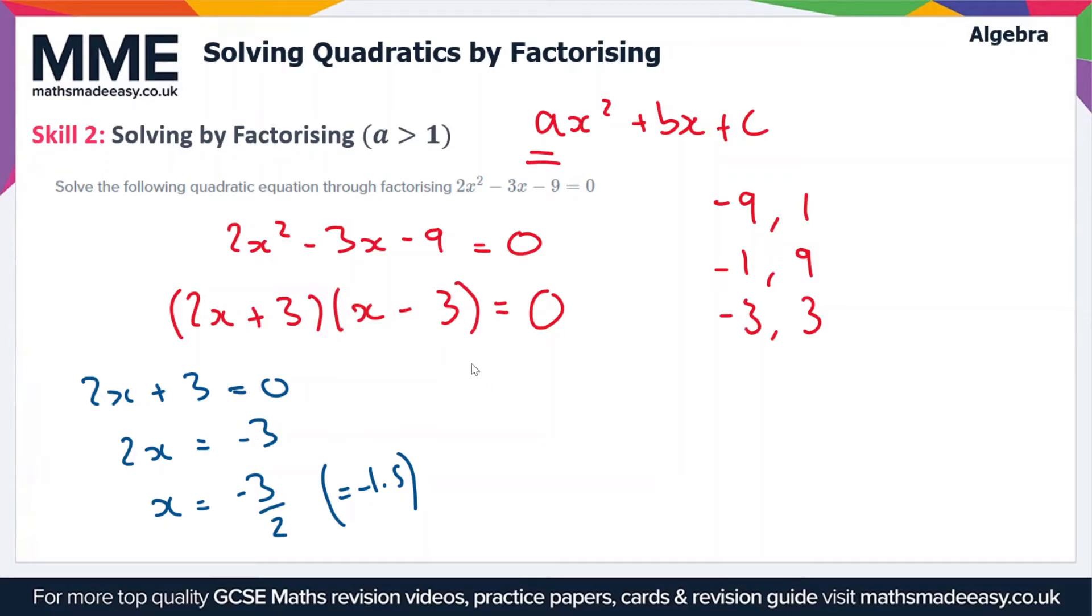The other solution we'll get from saying x minus 3 equals 0. So that's simple enough to solve: x equals 3. So our two solutions are x equals minus 3 over 2 and x equals 3. These are the two roots of the equation.